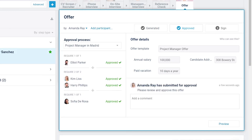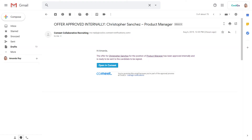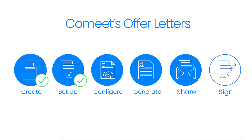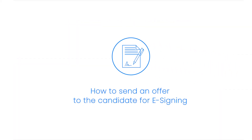After the offer letter has been fully approved, the assignee will be notified and the third stage, the Sign tab, will be enabled. Congratulations! You now know how to configure an offer in a position workflow, generate the offer for a candidate, and share it internally for approval. In the next video, you will learn how to send an offer to the candidate for e-signing.